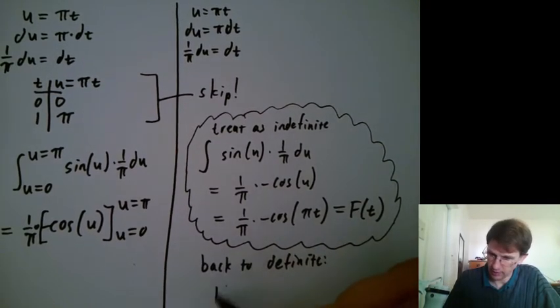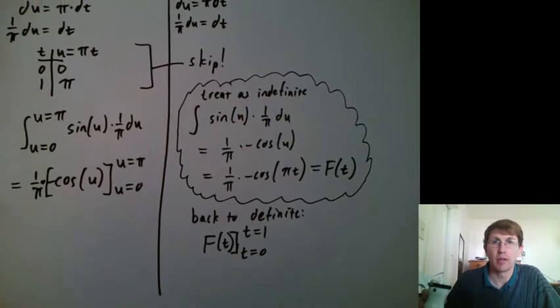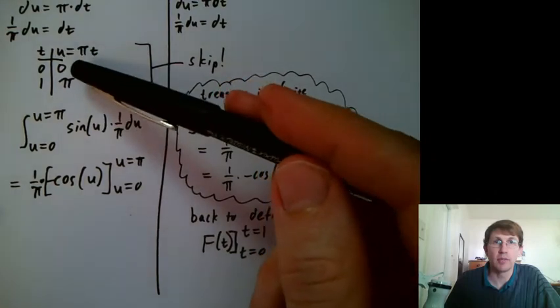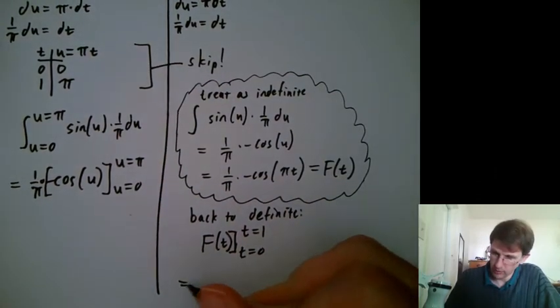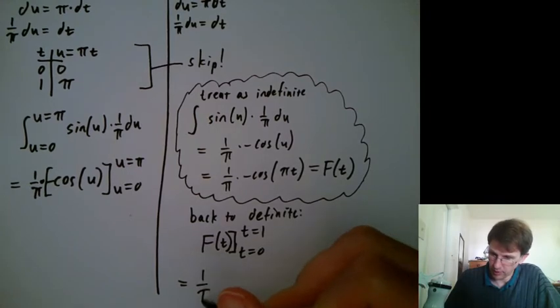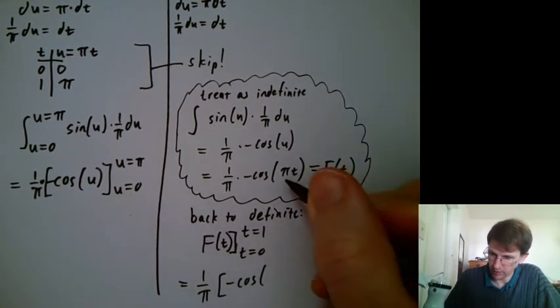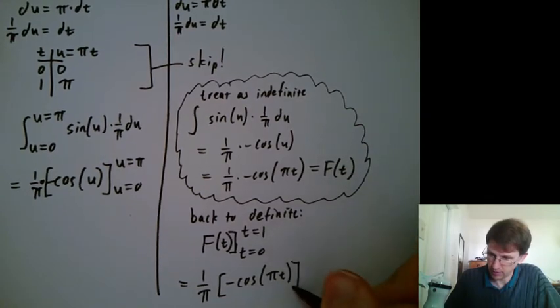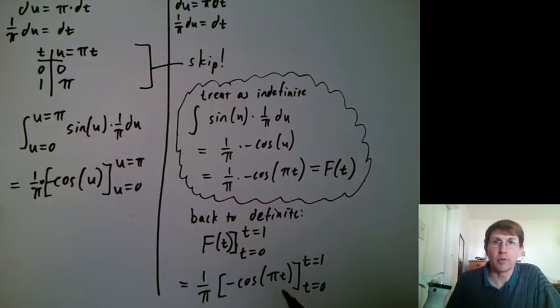So now back to definite territory. Now I can write F of t from t equals 0 to t equals 1. So I didn't have to substitute and do a little translation table. Or if you want, you could write 1 over π times negative cosine of π t from t equals 0 to t equals 1. And then plug in.